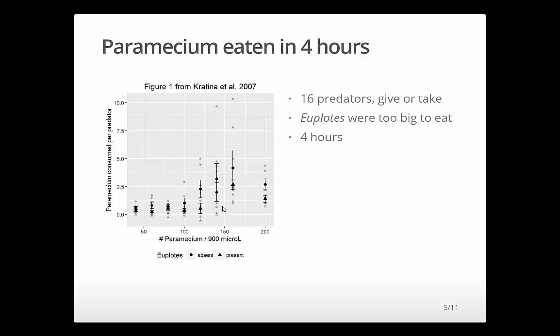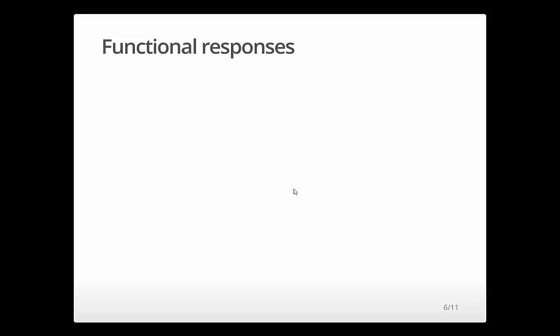And so what you can see is the more prey there are, the more each of the predators eat. That seems pretty reasonable. And the presence of non-prey reduces the effectiveness of the predator. They eat less prey. So they're getting what's called interference. And so they did a bunch of things with this sort of data. But just for today's demonstration, we're just going to fit one of these models.